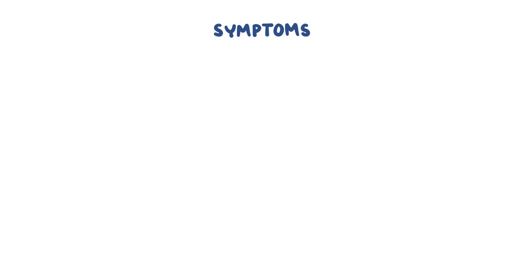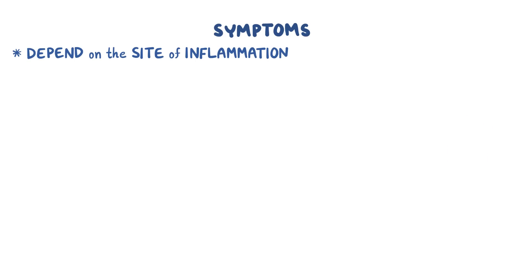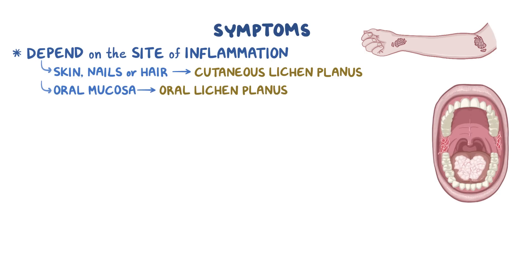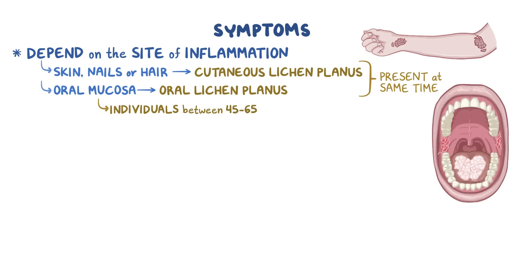Symptoms of lichen planus mainly depend on the site of inflammation. If it happens in the skin, nails, or hair, then it's called cutaneous lichen planus, and it often affects the wrists and elbows. If it occurs in the oral mucosa, then it's called oral lichen planus. Most of the time, cutaneous lichen planus and oral lichen planus are both present at the same time. Oral lichen planus typically affects individuals between ages 45 and 65. Lichen planus can be described using the six Ps. The first P is for planar, meaning that the rash is flat-topped.